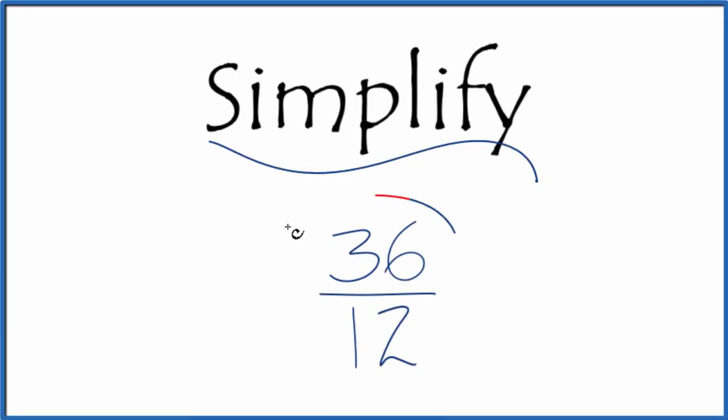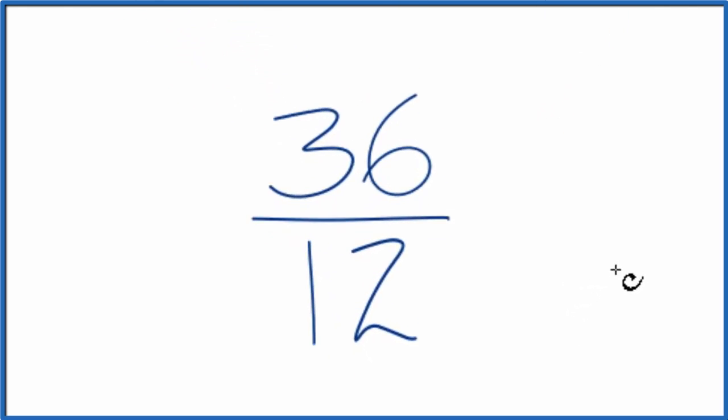Let's simplify the fraction 36/12. Here's how we do it. We want to find another fraction that's equivalent, has the same value as 36 over 12 reduced to simplest terms.